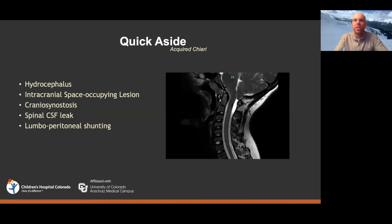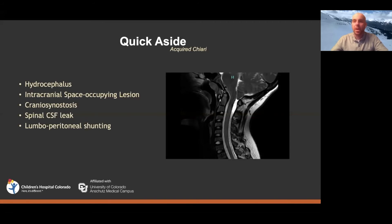One thing to mention is the concept of an acquired Chiari malformation — something that looks like a Chiari 1 but is induced by some other condition. It's really important to recognize these. Often when a patient with a Chiari is referred, you may only have a spine MRI and not a brain scan, or vice versa. It's critical that you image the entire neural axis so you can be sure that when you diagnose a Chiari, that's actually what's going on.